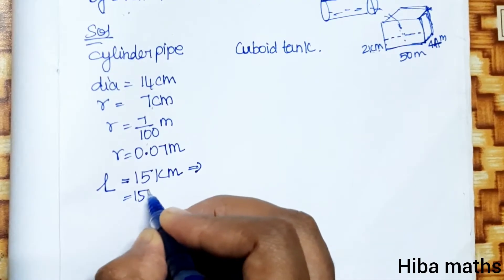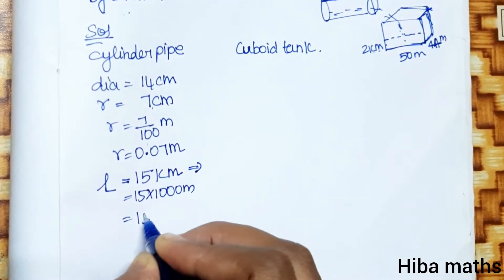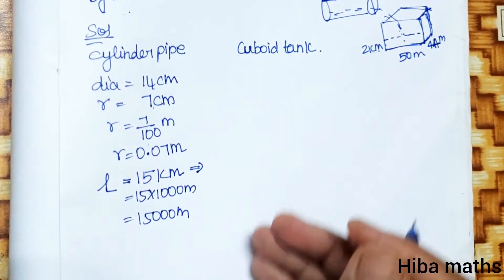One kilometer is equal to thousand meter. So 15 into thousand meter, that is 15,000 meter. This is the cylinder height.